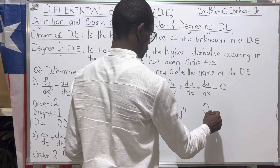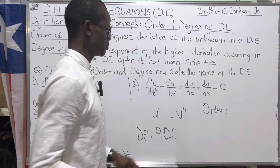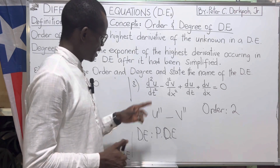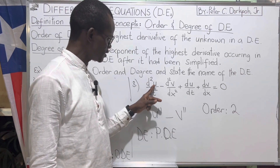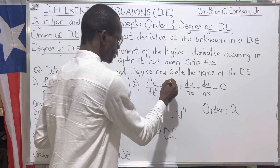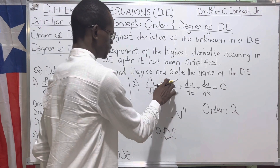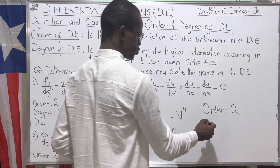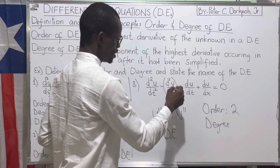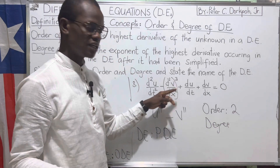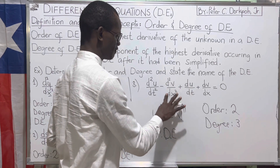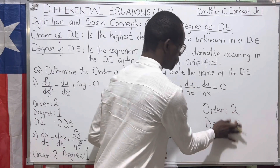What is the order — the highest derivative within this problem? The highest derivative is 2. Don't be confused by having two second derivatives; it doesn't matter. Our focus is simply on what the highest order is, and since it is 2, the order is 2. What is the degree? The highest order term is not raised to any higher power, so the degree is just 1.